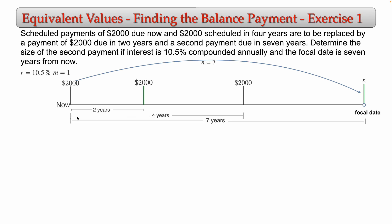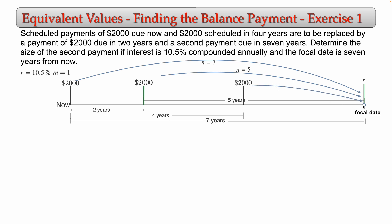For the replacement payment of 2000 at two years, we compute its future value to the focal date. The time from two years to seven years is seven minus two, which equals five years, so n equals 5. For the scheduled payment of 2000 due in four years, going forward to the focal date is seven minus four, which equals three years, so n equals 3.